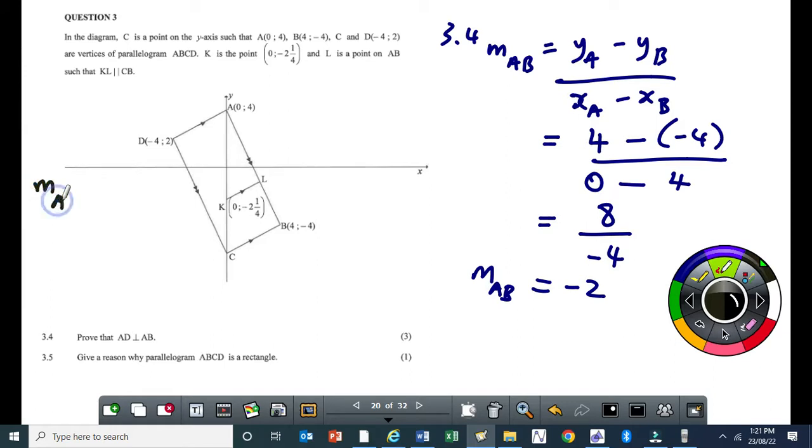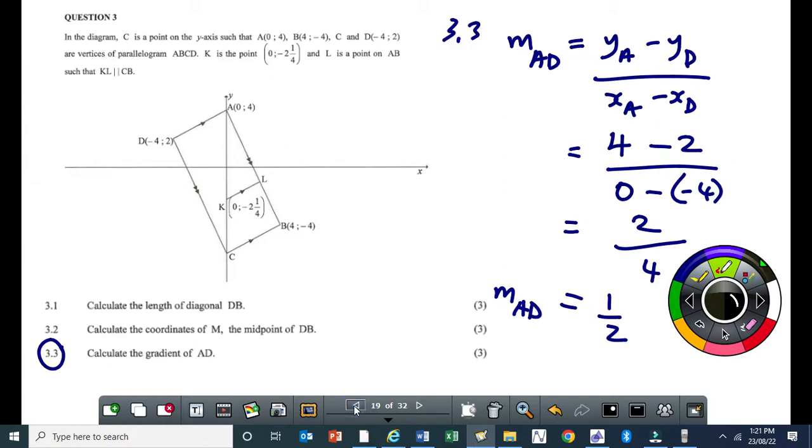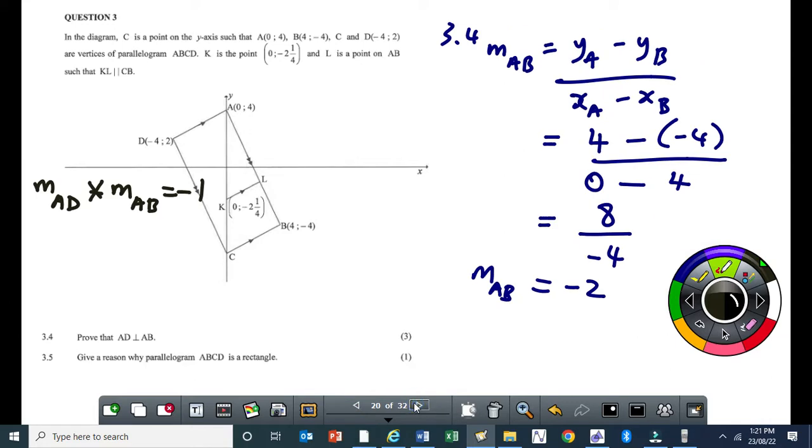Then we use this formula now. M AD times M AB must equal negative 1. I must multiply the gradient of AD by the gradient of AB and I must get negative 1. So let's check that. M AD, I got it here, it's a half. So this would be a half times m AB, that's minus 2. I must get minus 1. So a half times minus 2 gives me negative 1.